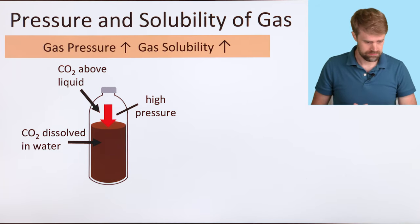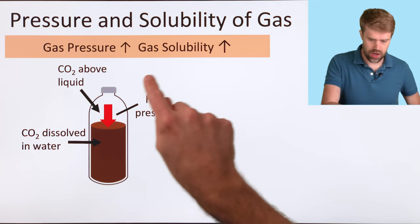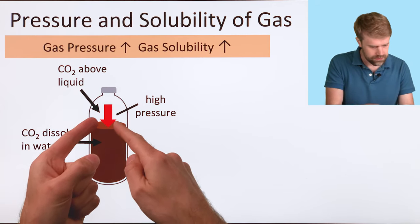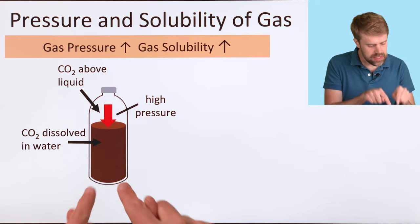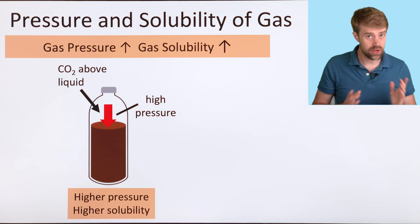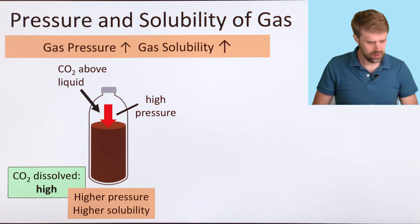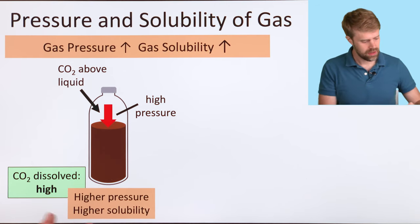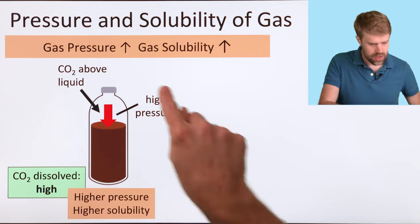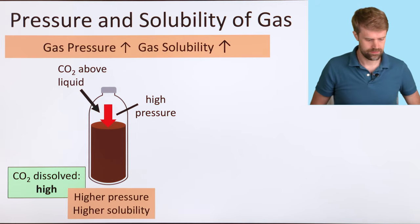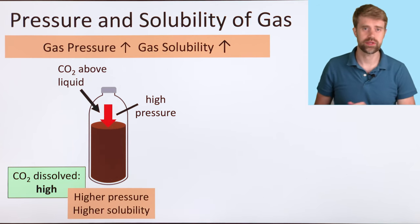Now here's the trend. As we increase the pressure of the gas above or on the liquid, we increase the solubility of the gas that's in the liquid. So higher pressure, higher solubility. Relatively speaking, there's a high amount of carbon dioxide dissolved in the liquid because of the high pressure above. When the cap is on, there's a lot of gas pressure above the liquid.